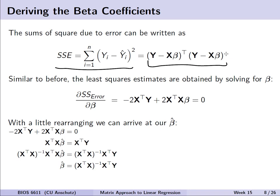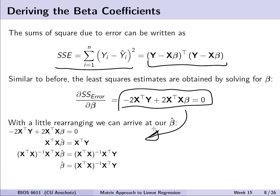Like before, we take the partial derivative and solve with respect to each beta coefficient. We take the derivative of sums of square error with respect to beta. Since we're dealing with the entire vector of beta terms at once, we can derive all estimates simultaneously, arriving at beta-hat equal to (X-transpose X) inverse times X-transpose times Y.